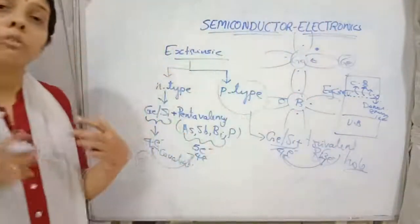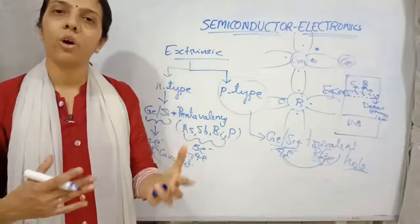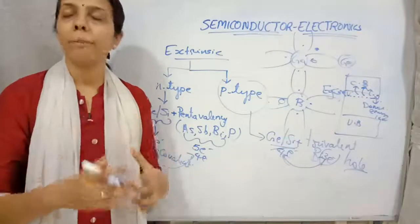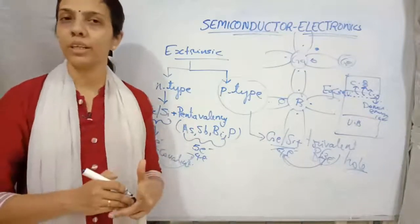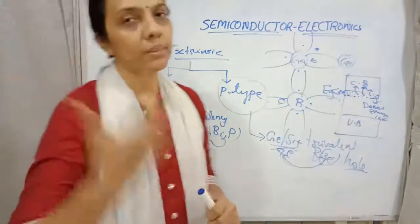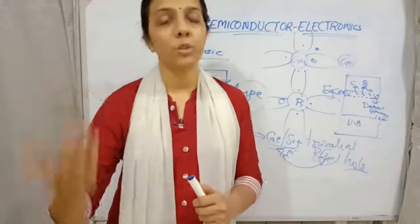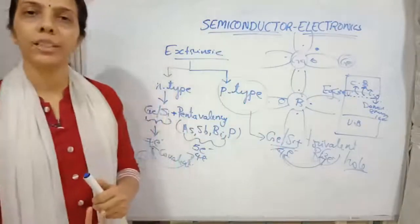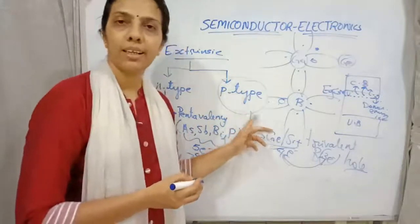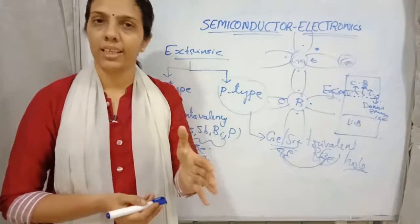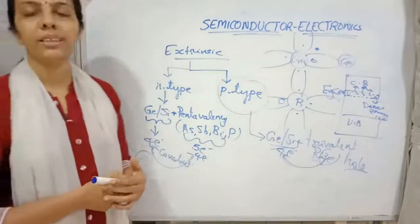The number of holes is more in p-type semiconductors, so holes are the majority carriers. Electrons are the minority carriers — when temperature is increased, electrons jump to a higher energy level, but holes remain far more numerous. Therefore, in p-type semiconductors, electrons are the minority carriers and holes are the majority carriers.